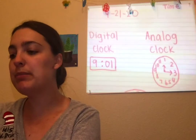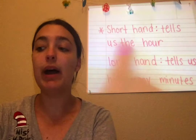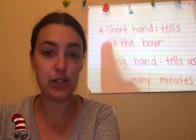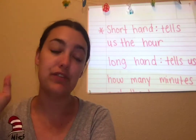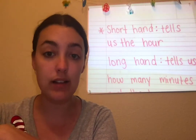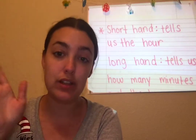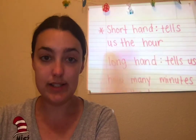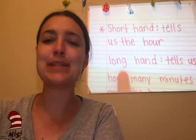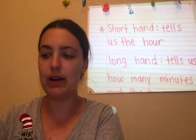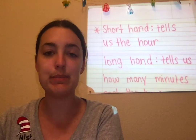We talked about how the shorthand tells us what the hour is. The shorter hand on the clock is always going to tell us what the hour is. If the shorthand is pointing to the eight, it's eight o'clock. If it's pointing to the six, it's six o'clock. If it's pointing to the three, it's three o'clock. Shorthand always tells us the hour. And the longhand tells us how many minutes past the hour.